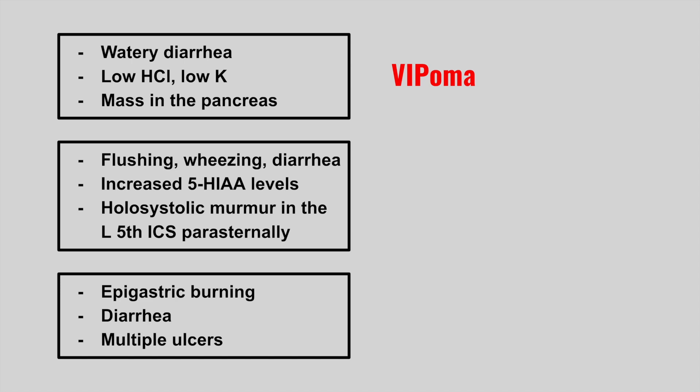The next patient presents with flushing, wheezing, diarrhea, increased serotonin levels, and a holosystolic murmur in the left fifth intercostal space peristernally. This is carcinoid syndrome. Remember, the heart murmur is due to the tumor affecting the right-sided heart valves.